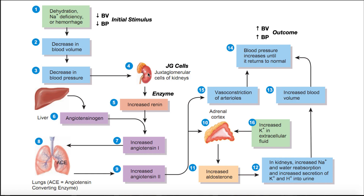Within the kidney, we have a cluster of cells referred to as the juxtaglomerular apparatus. Within that apparatus, there are cells called juxtaglomerular cells, often called JG cells. When these JG cells sense the decreased blood pressure, they release an enzyme into the blood called renin. Note that renin is not a hormone — it is an enzyme, and we'll see that in just a minute.